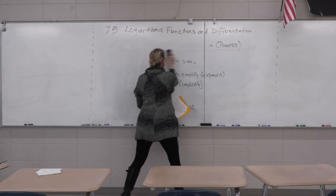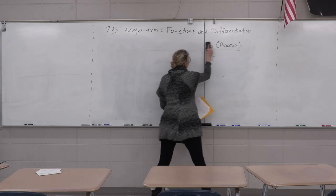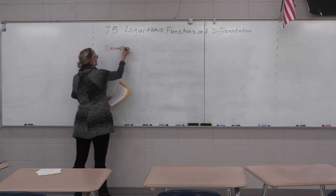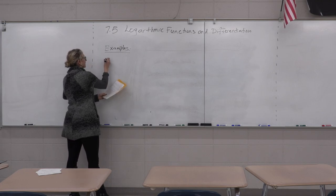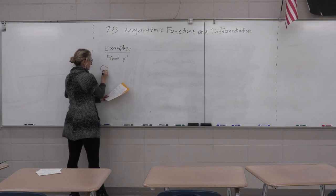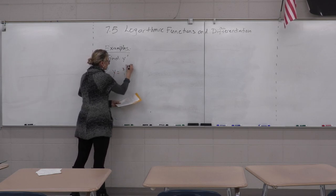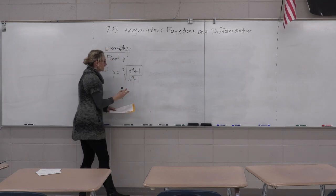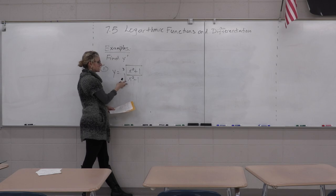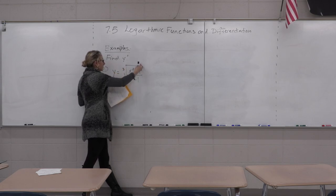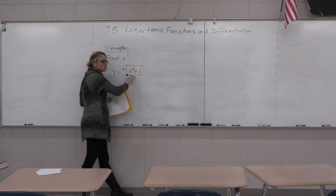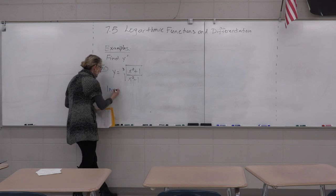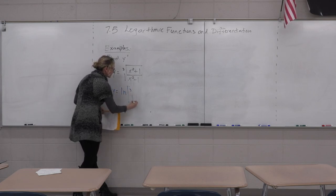Logarithmic differentiation examples — find y prime. Number one: y equals the cube root of the quantity x squared plus one divided by x squared minus one. Taking the derivative directly would require the outer cube root layer plus quotient rule inside — very messy. So take the natural log of both sides.